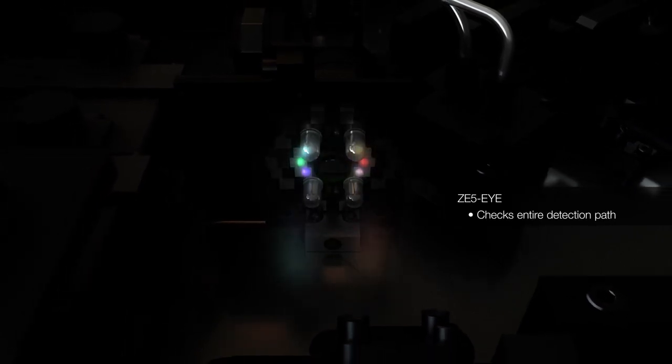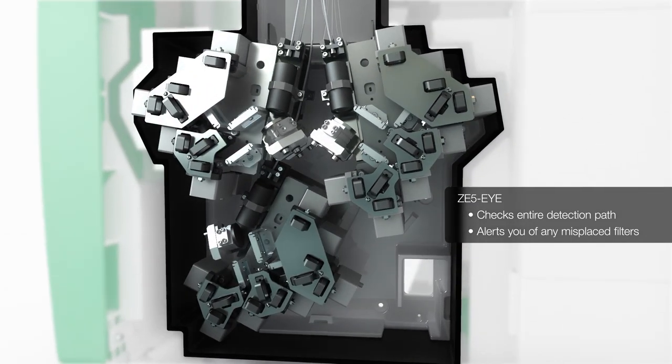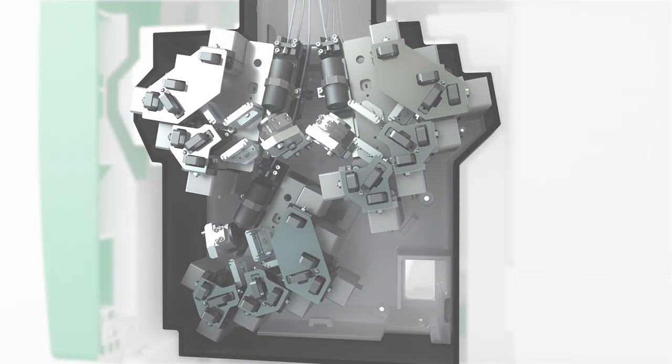Before each run or after opening the filter door, the ZE5i performs an automated check to ensure that no filters have been removed or placed in the wrong spot. It checks the entire detection path, including the pinhole, filters, PMTs, and electronics, and will alert you of any misplaced filters.